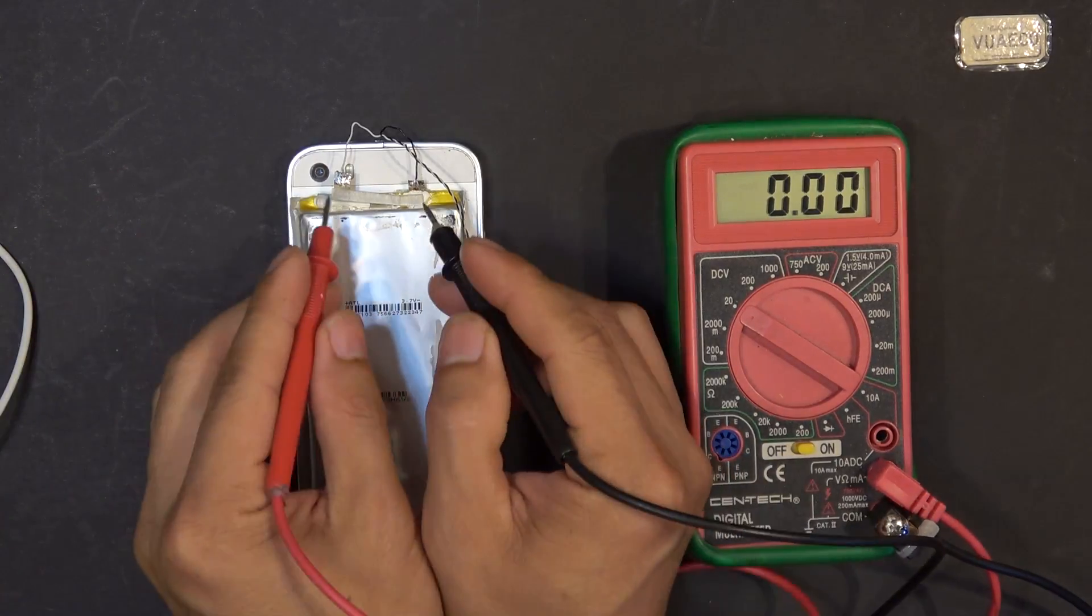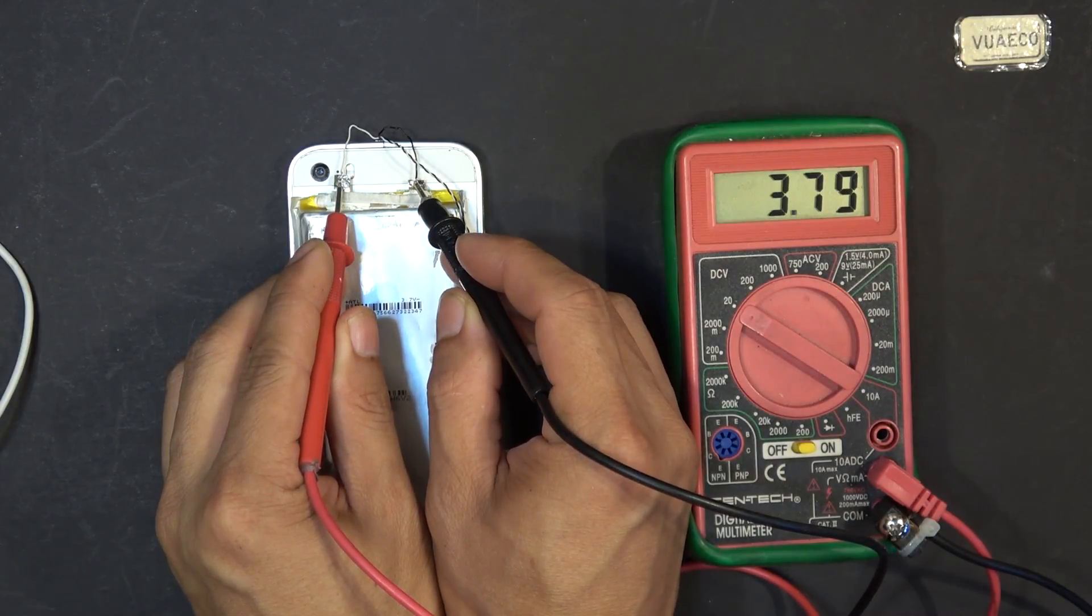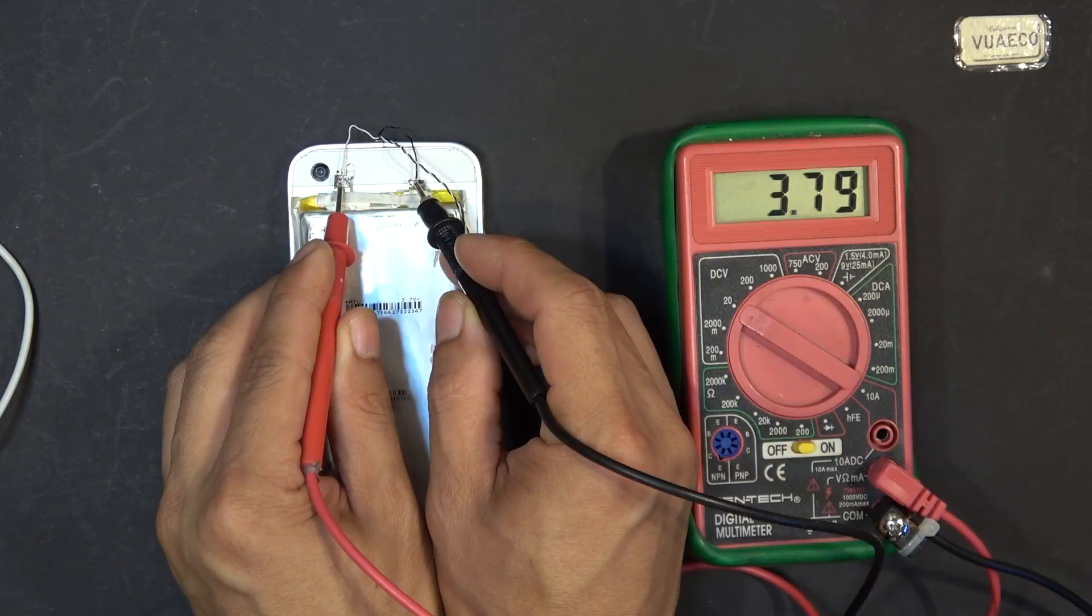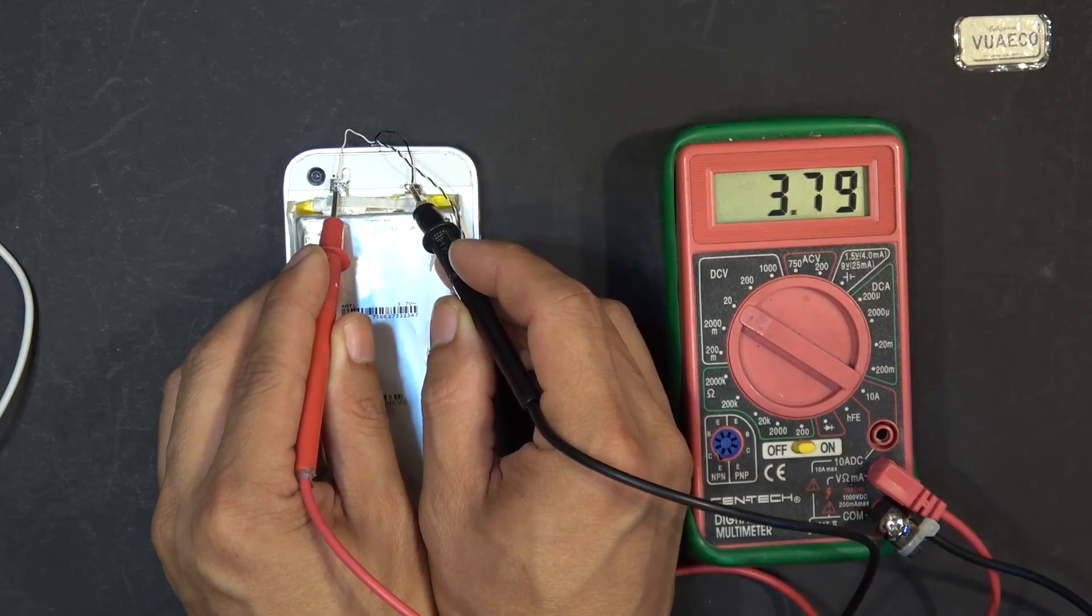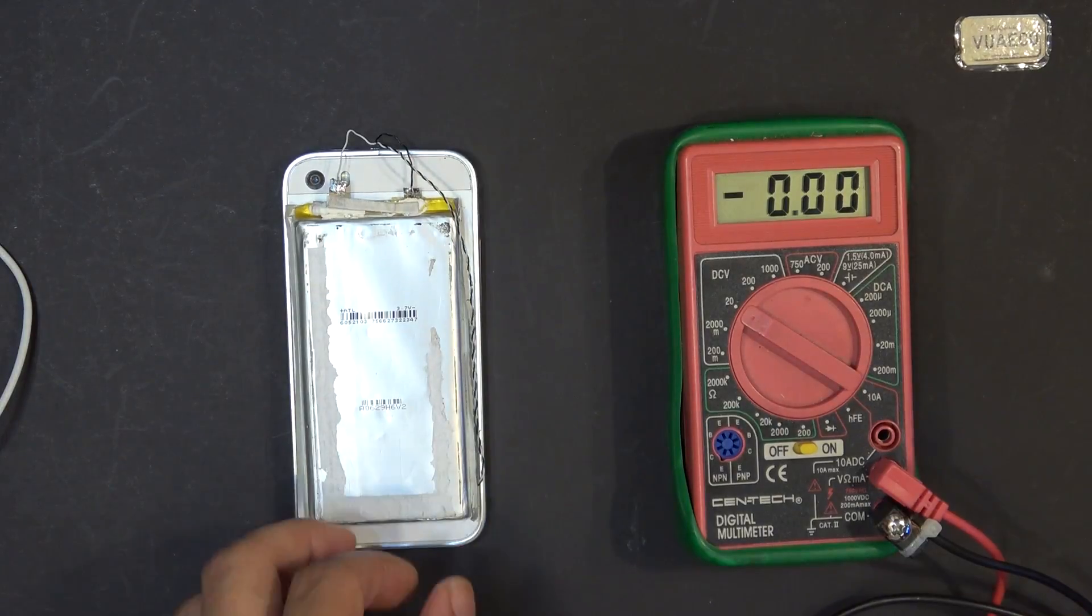Let's check on the voltage. 3.79, so 3.8 volts. And that's about 60% and it's still not able to power the phone.